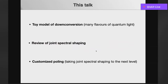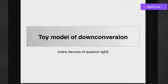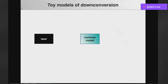Let me give an overview of this talk, broken down into three sections. First, I'll give a toy model description of down conversion and highlight the many different flavors of quantum light. Then I'll give a review of joint spectral shaping — the spectrum is a really important property of the light generated by down conversion. Finally, I'll focus on research with my colleagues on techniques we call customized poling, which really takes joint spectral shaping to the next level.